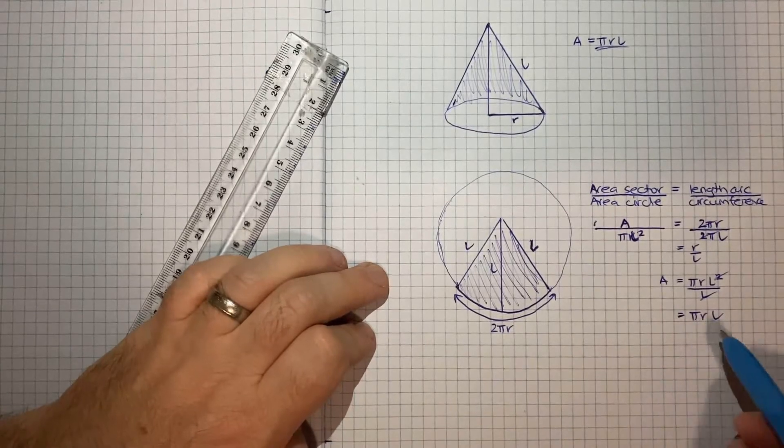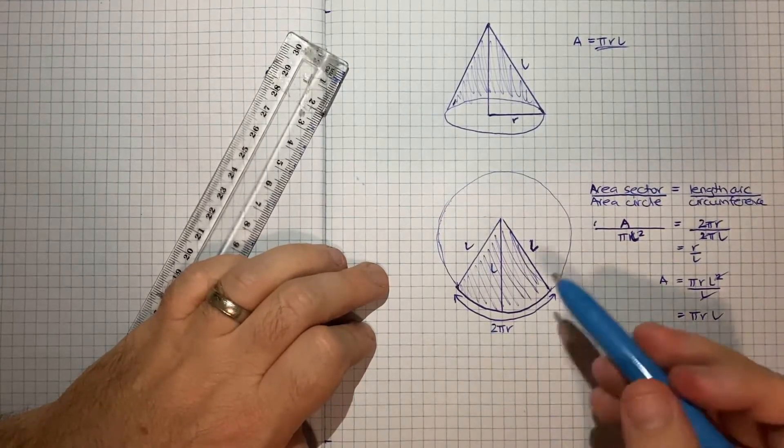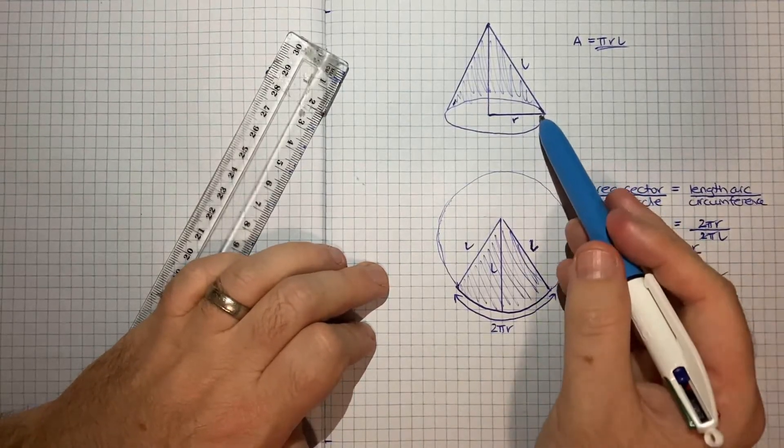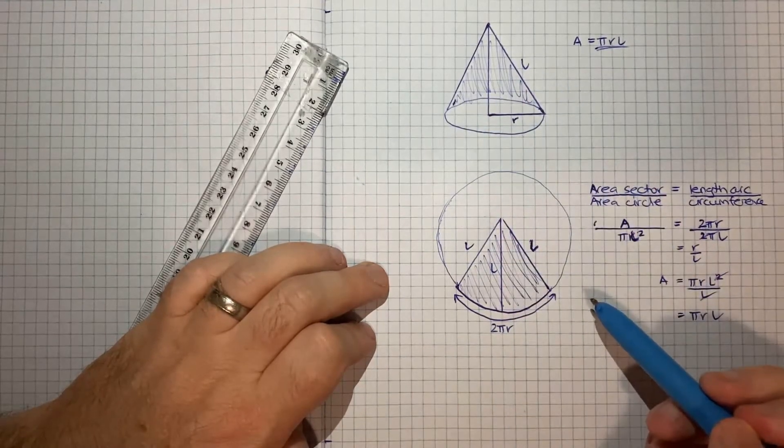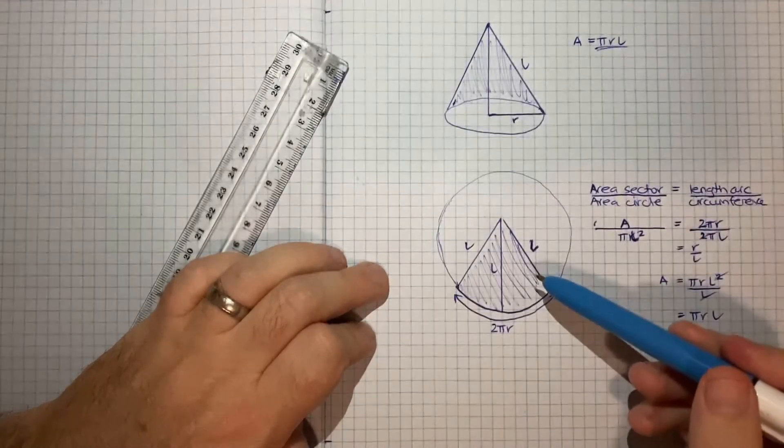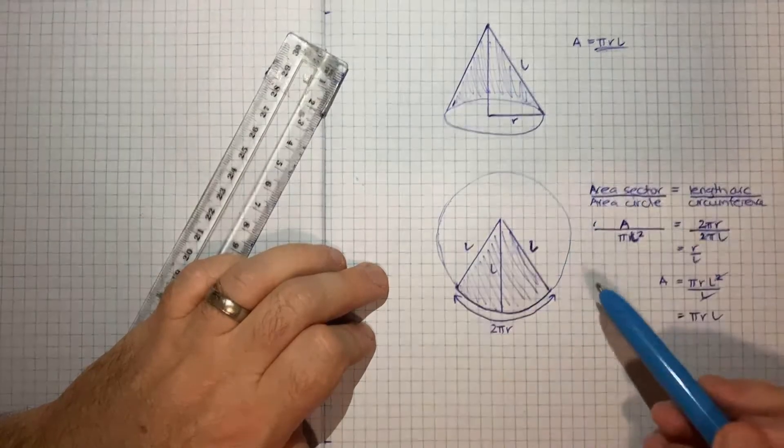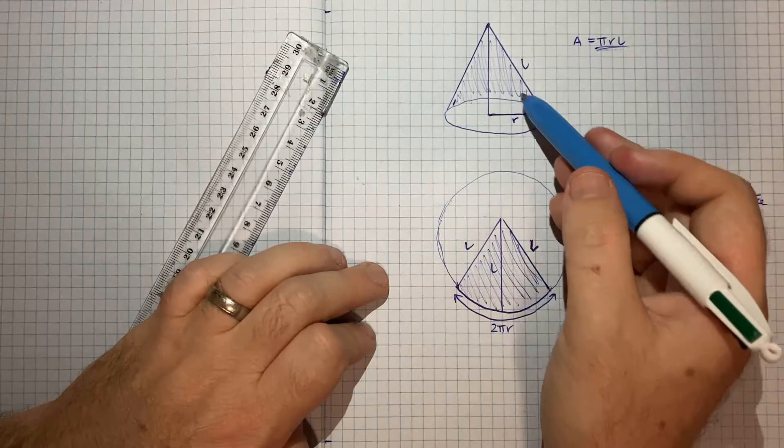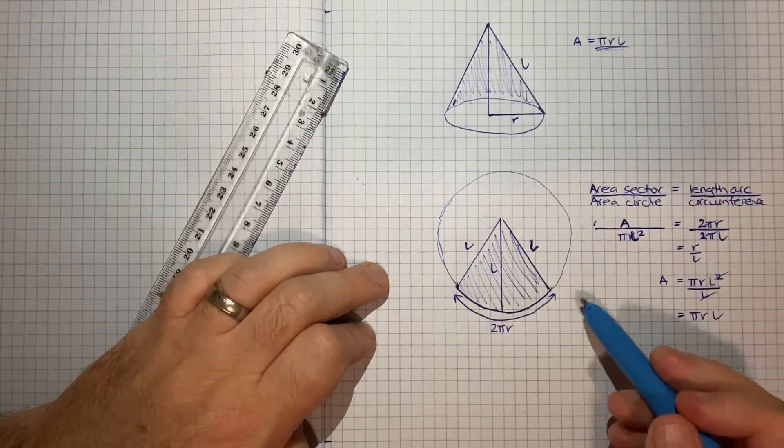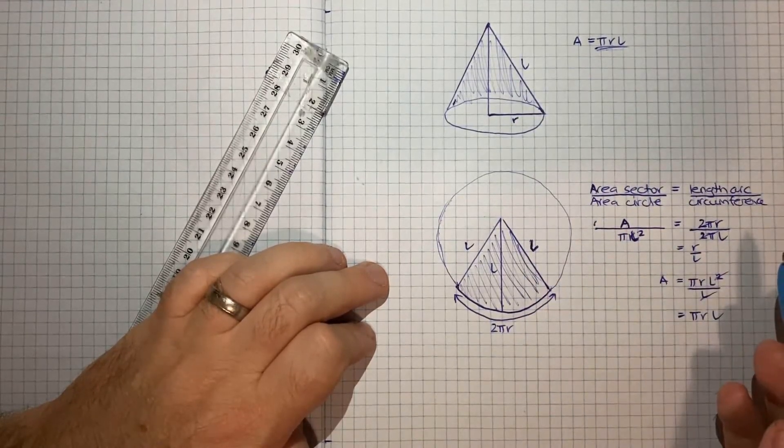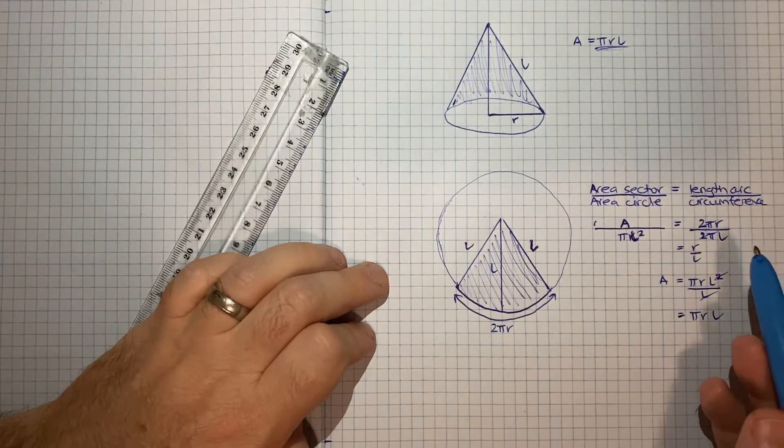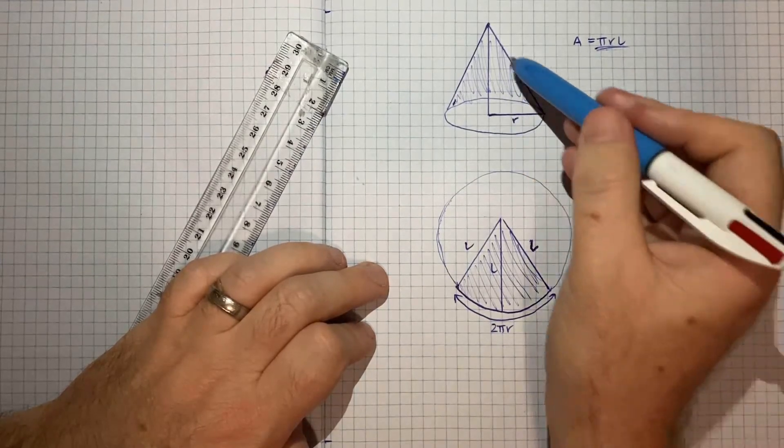So that's how you can do that proof. I think this one kind of required you to have some good visualization skills. Thankfully once you've done this proof once, you can rely on the result. And once you're familiar with this visualization technique, it's a fairly easy thing to replicate. But yeah, as I mentioned, if you find that hard to do...